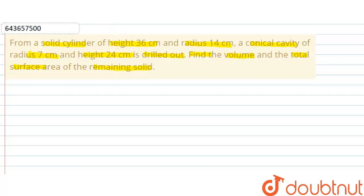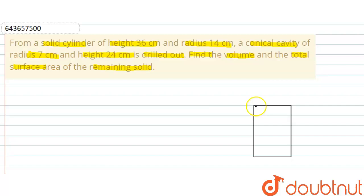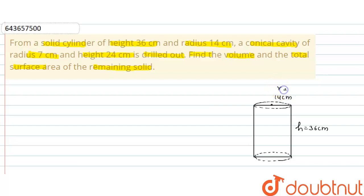Here we have a solid cylinder whose height is equal to 36 centimeter and radius is equal to 14 centimeter. First we will draw a suitable diagram. We have drawn a cylindrical shape whose height h = 36 centimeter and radius r = 14 centimeter.